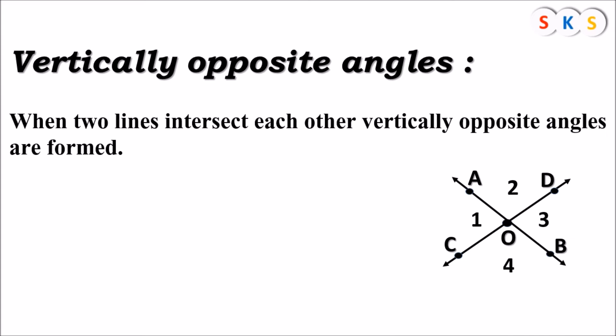In this figure, angle 1 and angle 3 are opposite to each other. So angle 1 and angle 3 form one pair of vertically opposite angles. Angle 1 and angle 3 means angle AOC and angle BOD. They are one pair of vertically opposite angles.